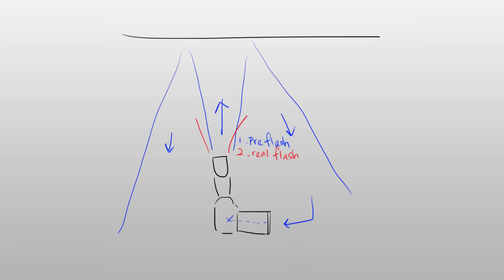With TTL, it doesn't actually know how high the ceiling is, but what happens is that the pre-flash travels upwards onto the ceiling, bounces back down through your lens and into your camera's metering sensor, so that your camera can calculate how much brighter or darker the actual flash has to be for the shot to be in correct exposure.